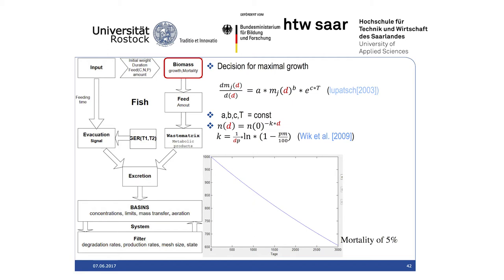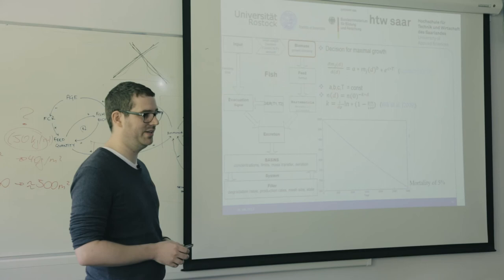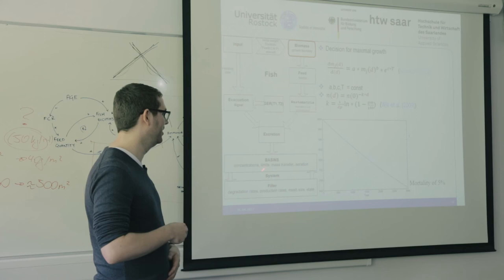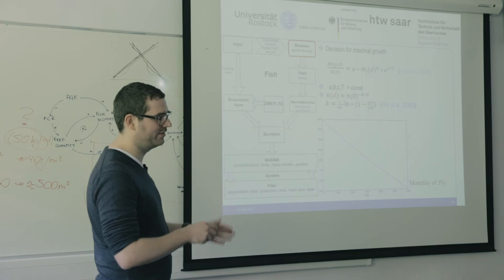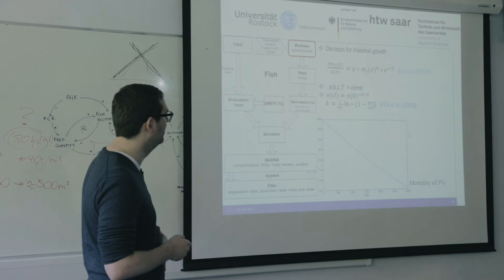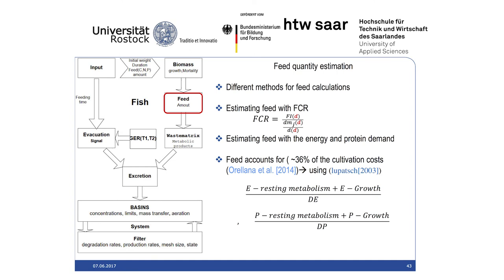The formula looks like this — you can see it always uses days, so it tells you how much they grow in one day. I set the parameters A, B, and C as constants in the model. I also decided to have the temperature set at 23 degrees in the fish model for now — because the fish model is not yet connected to the system model, so if you change the temperature in the system the fish model will not know it. We also added mortality.